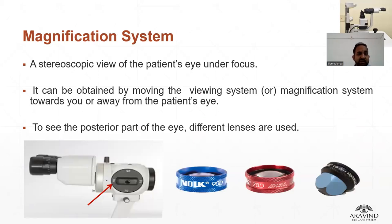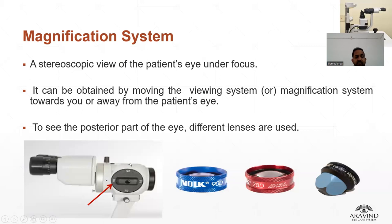Now let's see the magnification system. The magnification system of the slit lamp is similar to an indirect ophthalmoscope. It provides a stereoscopic view of the patient's eye under focus, obtained by moving the viewing system towards the patient or towards the examiner. There is a magnification knob with zooming lenses inside, marked with different magnification levels, which can be adjusted according to the examiner. There are also lenses used to see the posterior parts of the eye, like the 90D and 70D lenses.